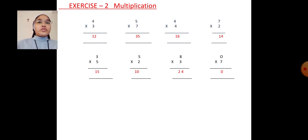7 into 2. 2's table we have to say how many times? 7 times. 2 7's are 14. Next, 5 into 3. 3 5's are 15.